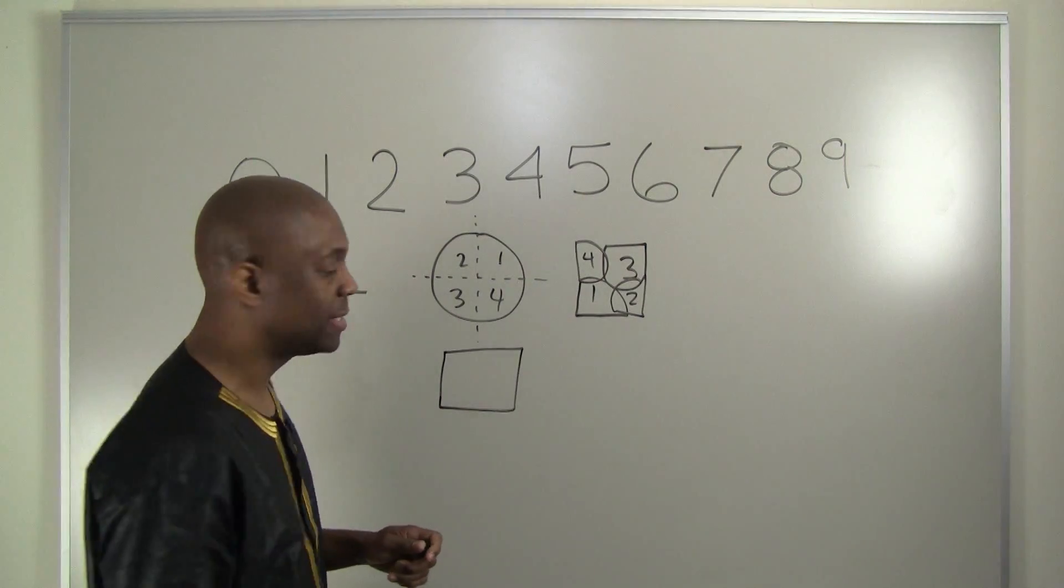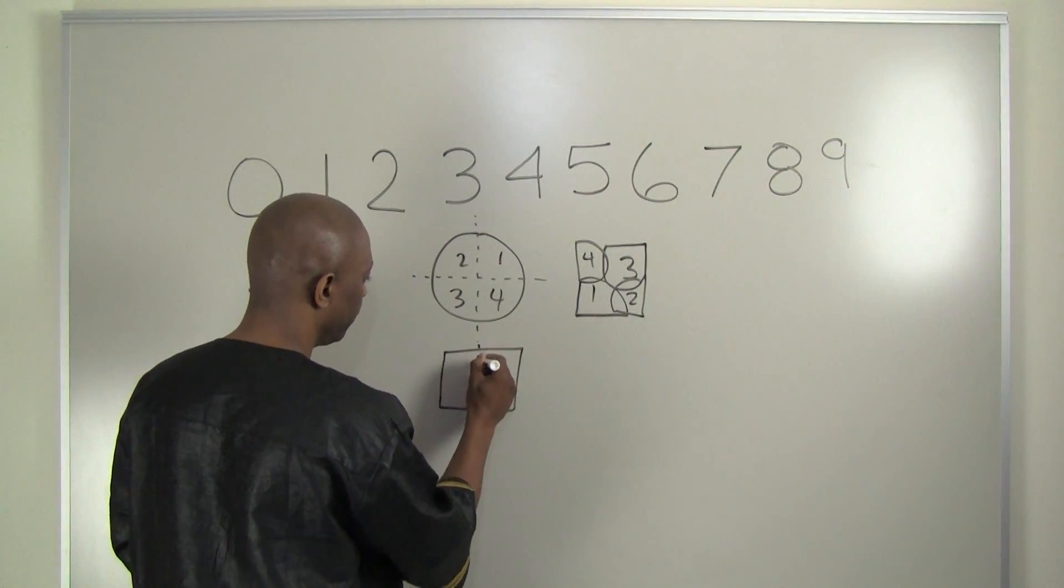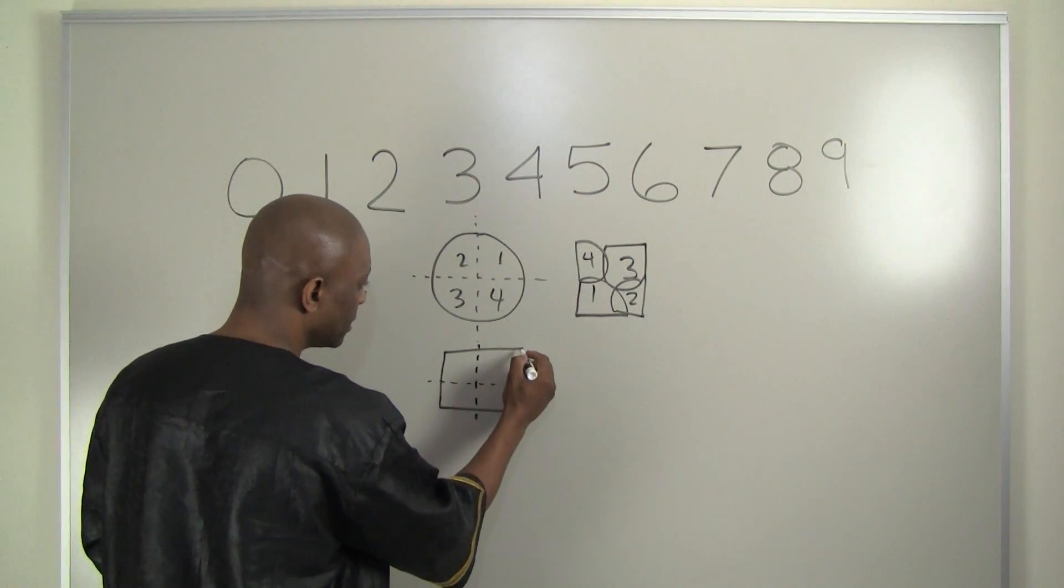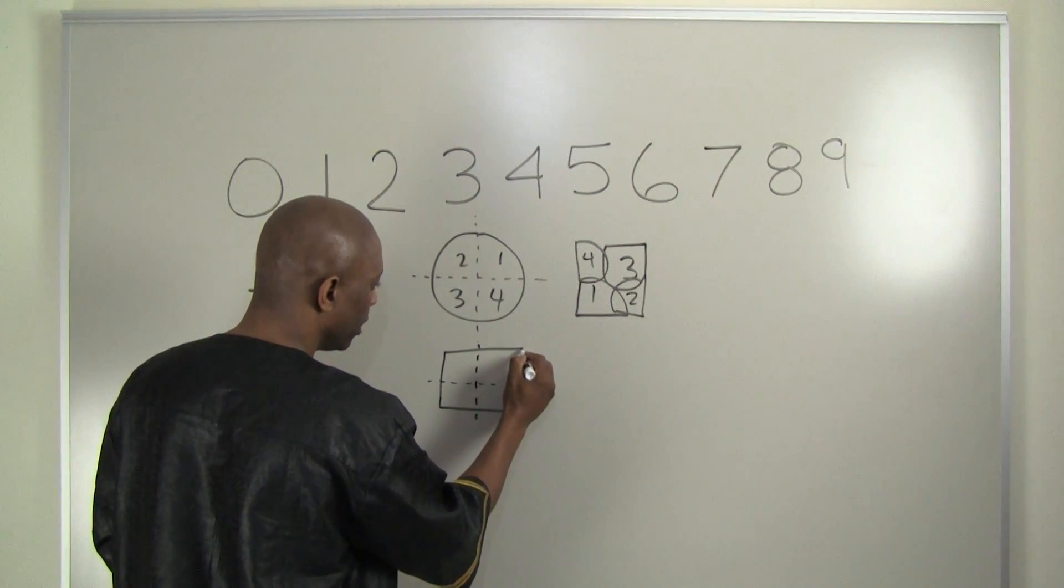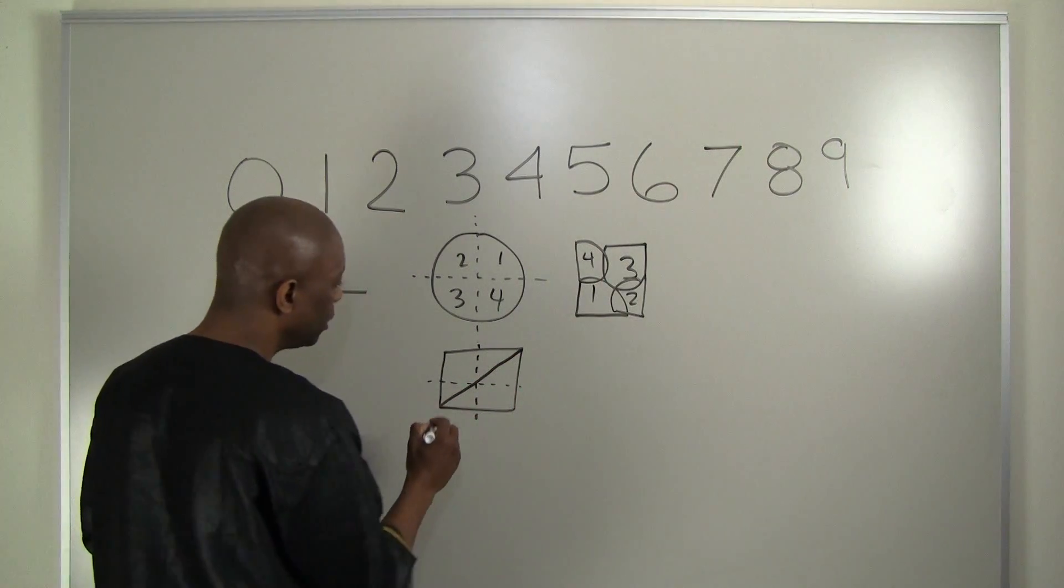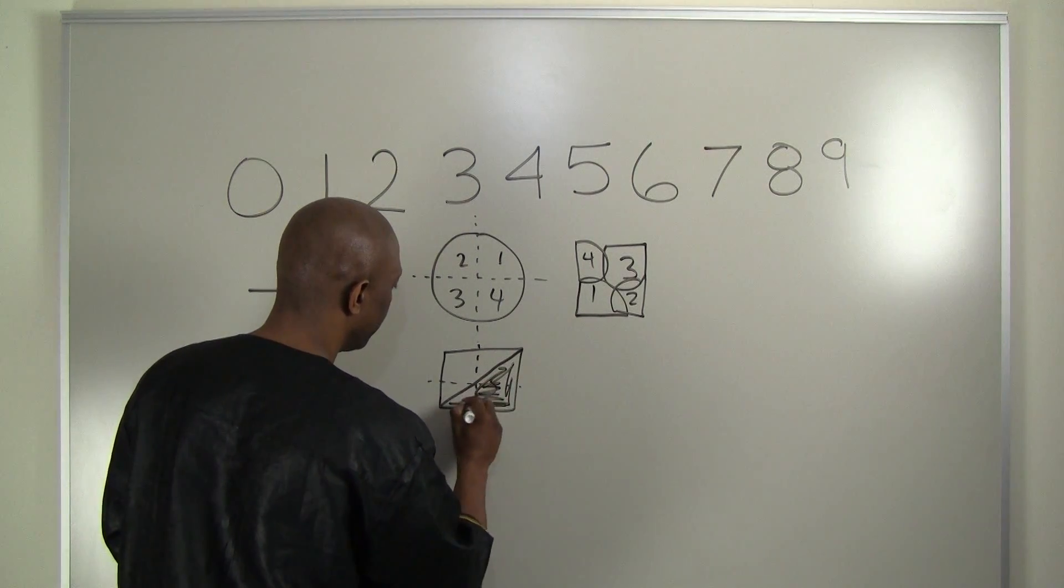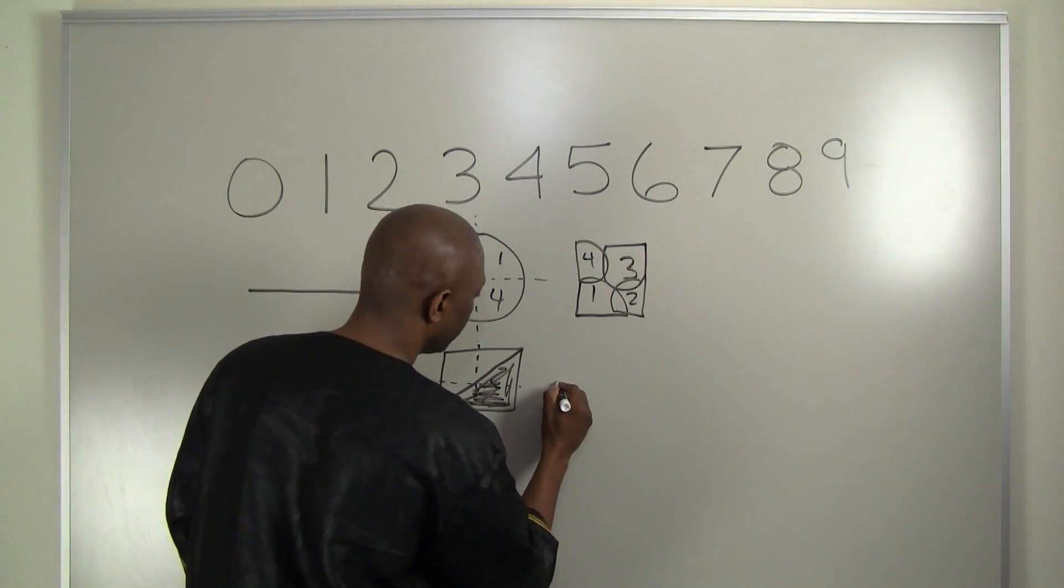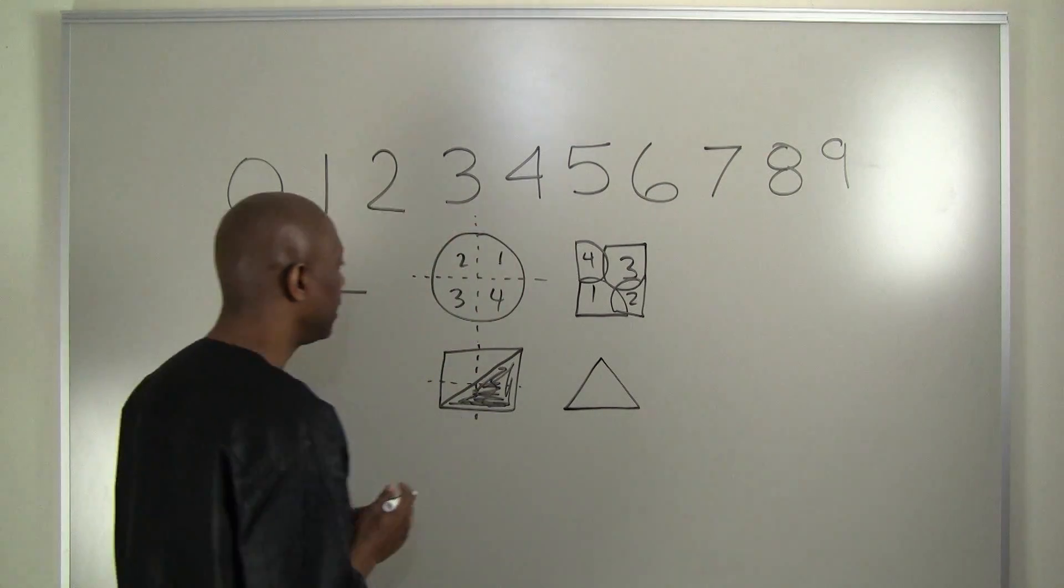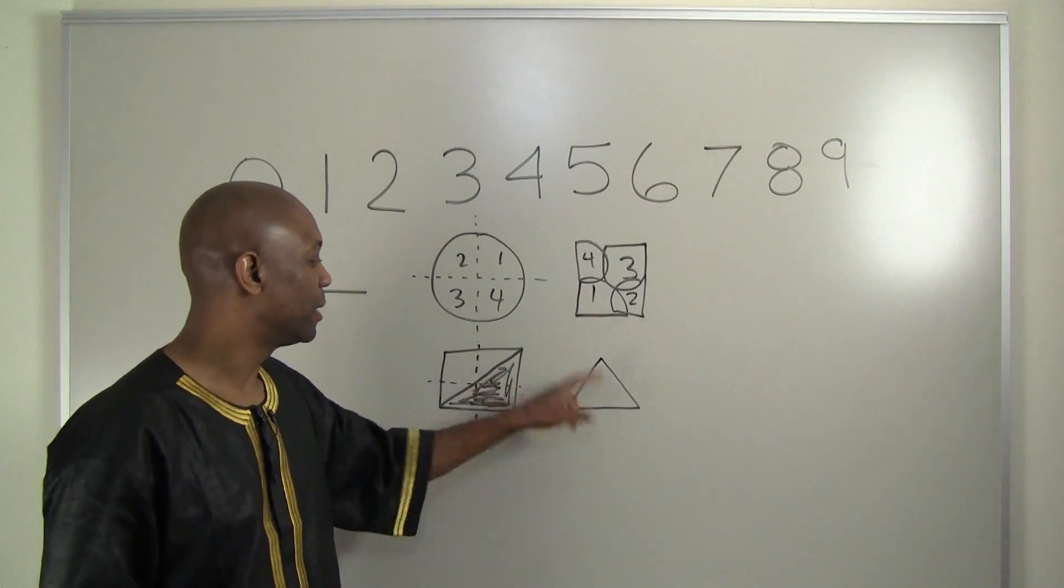Now, the square itself can actually be divided into four equal parts as well. Now, but if we take this square and we divide it evenly about its diagonal, you'll notice that we get a triangle here and a triangle here. Thus, we can see that from a line we get a circle, from a circle we get a square and from a square we get a triangle.